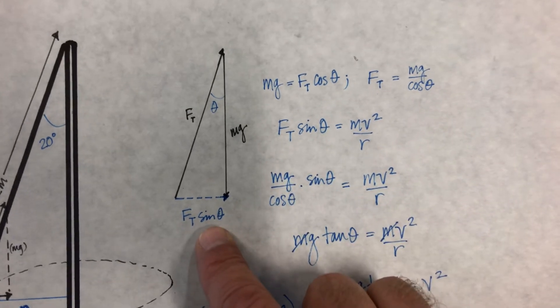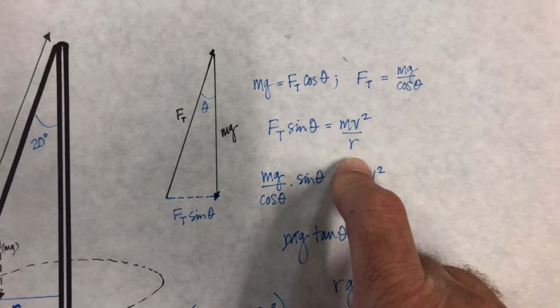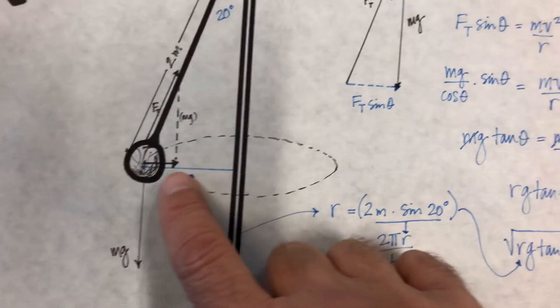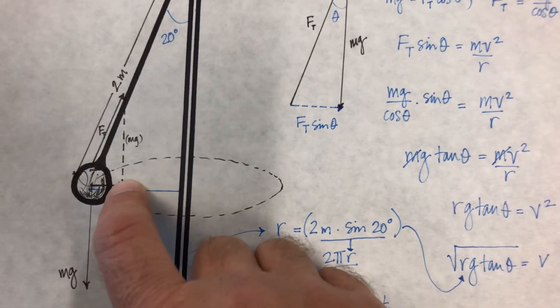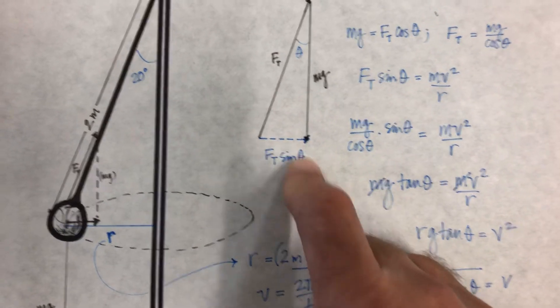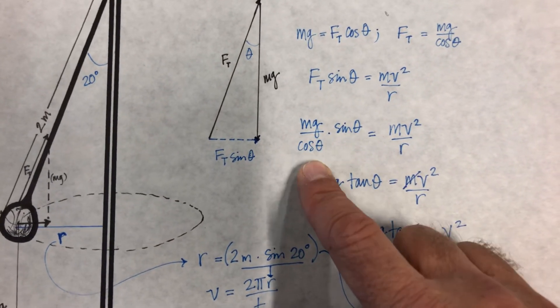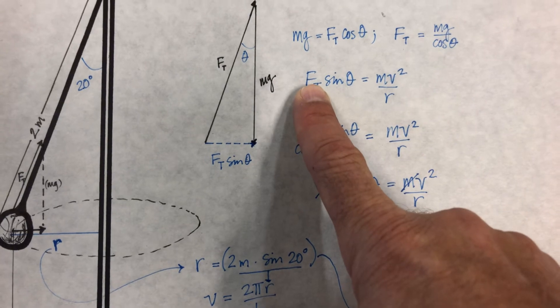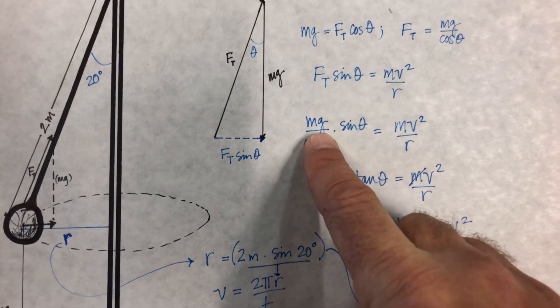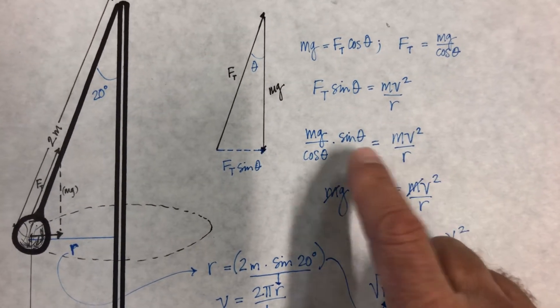So Ft sine theta is equal to the centripetal force, because that's the actual force that's pushing into the circle right here. It's the only force pulling into the circle. So Ft sine theta is equal to mv squared over r. So mg over cosine theta, which is Ft, right, times sine theta equals mv squared over r.